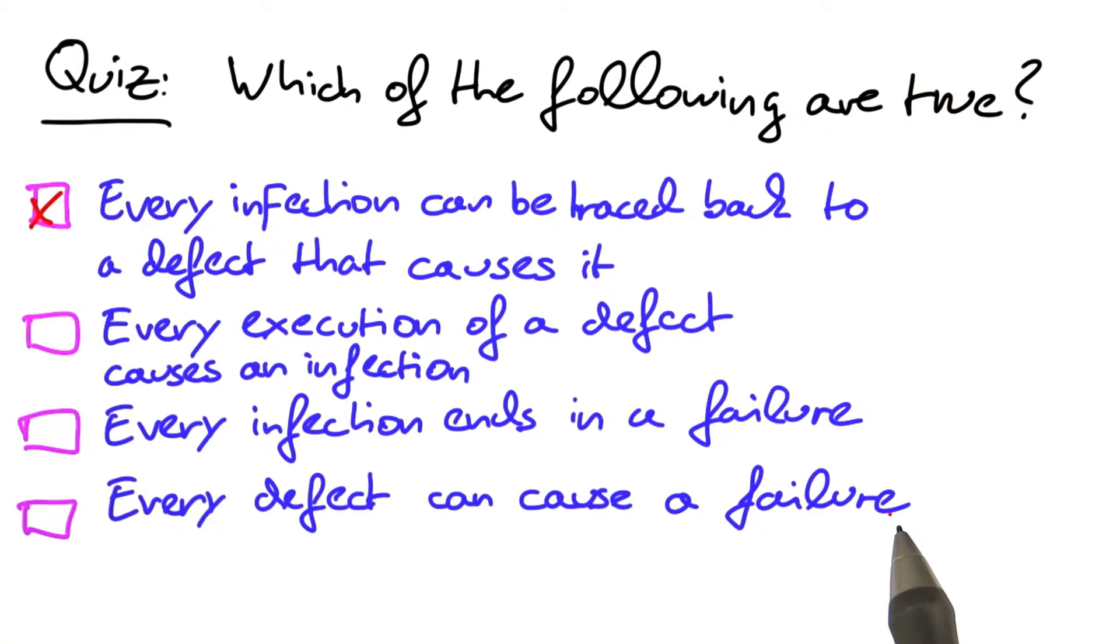Finally, every defect can cause a failure. Ha, that's tricky. Remember, a defect is an error in the code. Failure is an error in the execution. An infection is an error in the state. A defect is an error in the code. And you can have an error in the code even in code that's never executed or in code that's actually unreachable.